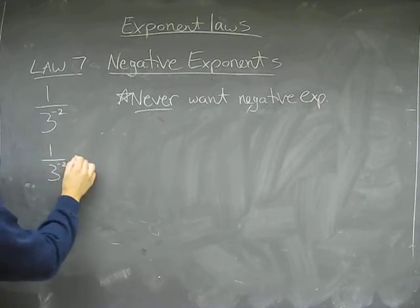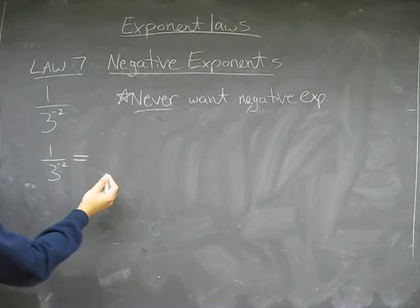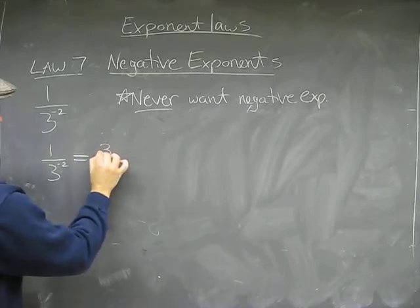One over three to the minus two is the same as three over one to the positive two.